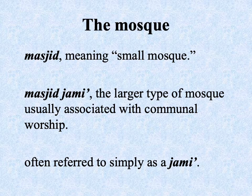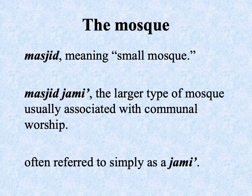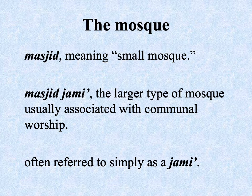Probably the most prominent architectural structure you find in Islamic civilization or Muslim-majority countries is the mosque. There are two different kinds: the local mosque, the masjid, which would service a neighborhood or small town; and then something more equivalent to a cathedral — the masjid jama, the larger type of mosque used to symbolize the glory of Islam and for important communal occasions of worship. Often we just refer to it simply as jama.